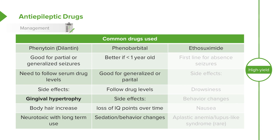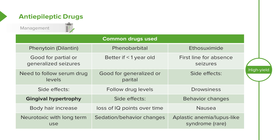Phenobarbital is generally better in children under one year of age. It's good for partial or generalized seizures, and again we need to follow drug levels. This can also cause a loss of IQ points over time. It has a general sedating effect which mitigates somewhat over time, but warn parents that for the next week or two their child may be excessively sleepy. Ethosuxamide is our first-line anti-seizure medicine for children with absence seizures. Its side effects include drowsiness, behavioral changes, nausea, and patients can develop aplastic anemia or a lupus-like syndrome.